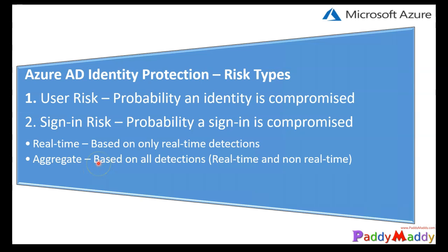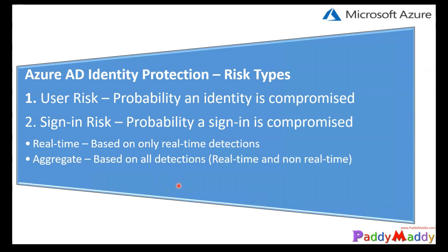These risks are shown as high, medium, or low in your Identity Protection manager console or in the Azure portal. Customers can use these risks to set and apply automated remediation policies — for example, a user policy or a sign-in policy.